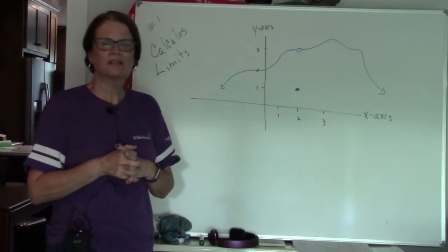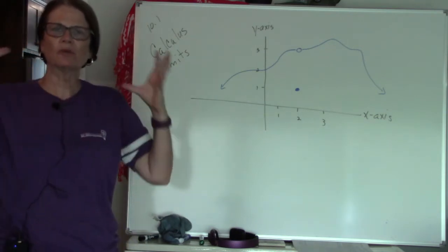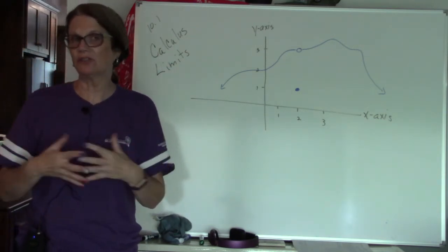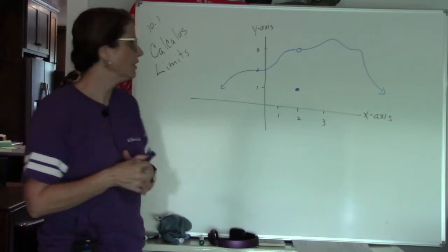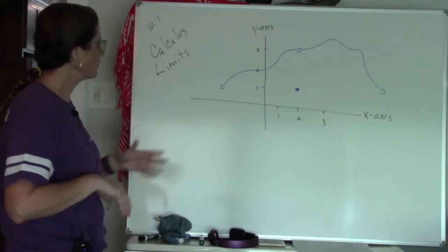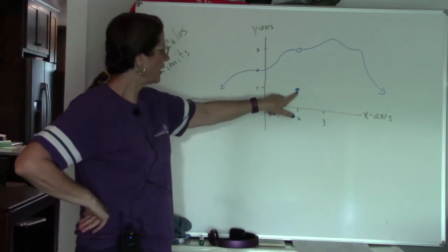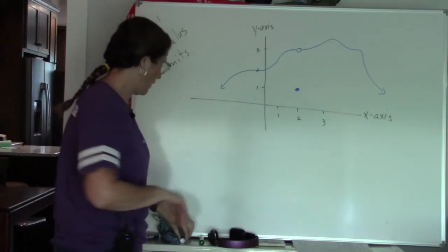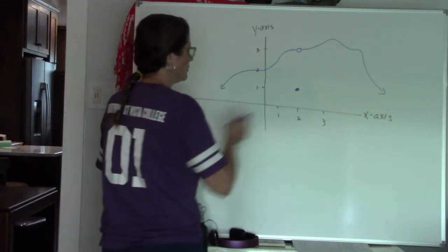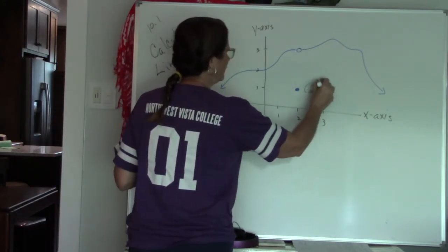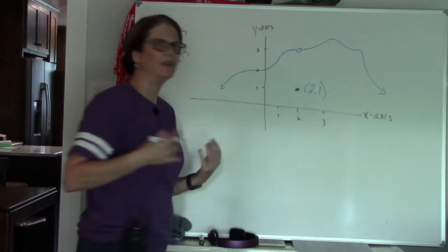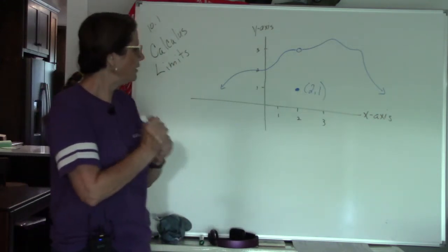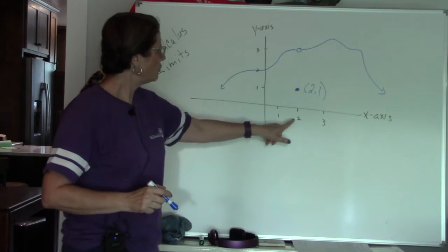A limit is what is happening around a specific point, and does the limit actually exist? In this example, we have a point at x is 2, y is 1. So this is our ordered pair (2, 1). That's our algebra — it's what's going on right at that point.